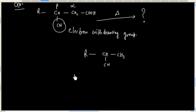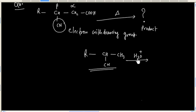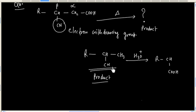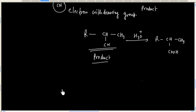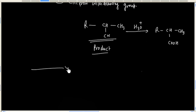Now, what will be the final product if this compound is hydrolyzed — that is, what is the product after hydrolysis of the product of reaction 1? Hydrolysis will give COOH in place of CN. So this is about decarboxylation of beta-keto acid.